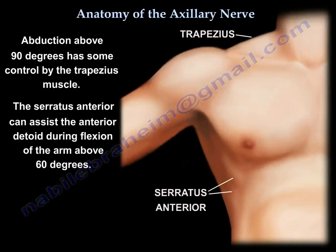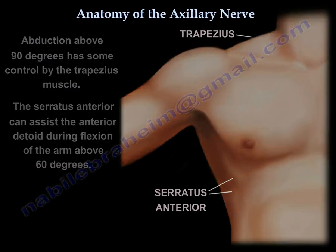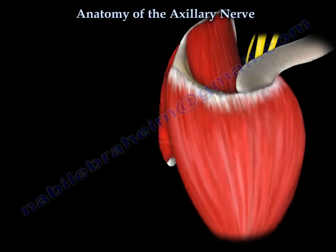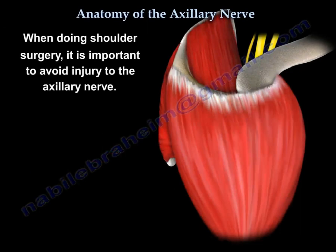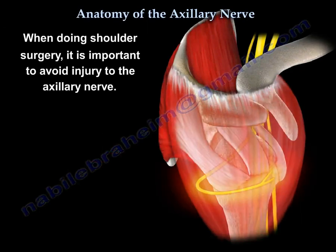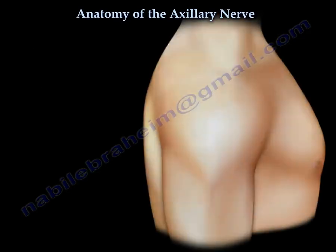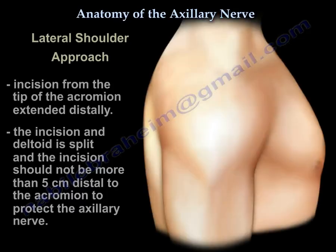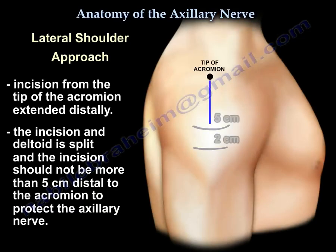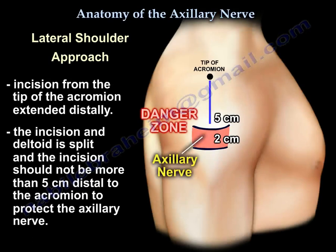The serratus anterior can assist the anterior deltoid during flexion above 60 degrees. Another important point: when we do shoulder surgery, we should avoid injuring the axillary nerve. This diagram shows the incision, where the nerve is, what the danger zone is, and what the optimal incision is.